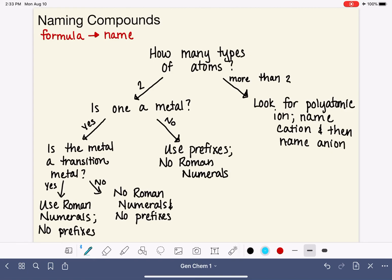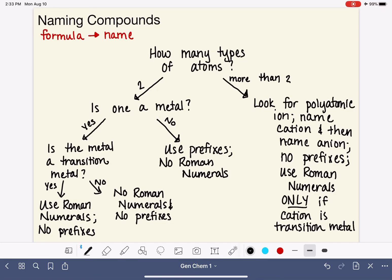You will use no prefixes, no matter what. You will use Roman numerals only if the cation is a transition metal. And that should walk you through naming most, if not all, of the compounds that you come across as a first-year student.